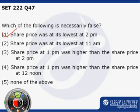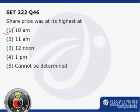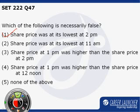The second option says share price was at its lowest at 11 a.m. Can I say from the figure that share price was least at 11 a.m.? No, I cannot say that, because it might be the 1 p.m. price which is lowest. So I cannot be absolutely sure whether the lowest price is at 1 p.m. or at 11 a.m. Hence I cannot say anything definitive about this option.